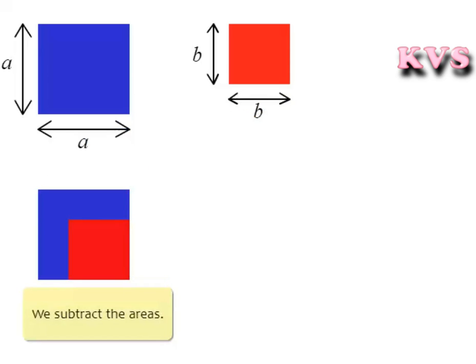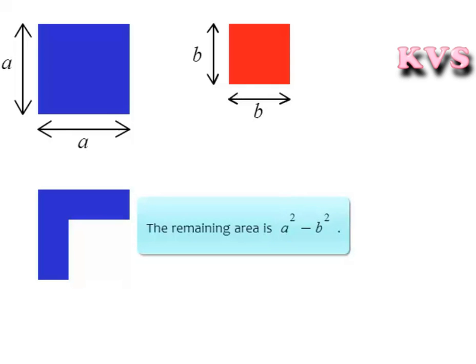If we subtract the areas, these two will look like this one. The remaining area is A square minus B square.